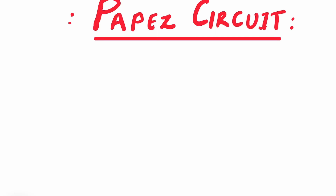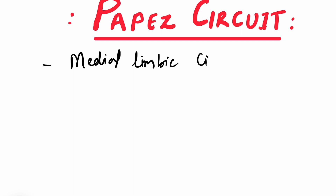Hello friends, welcome back to our YouTube channel Doctor's Corner. Today we are going to discuss about Papez circuit, which can also be pronounced as Papez circuit. It is also known as medial limbic circuit. Basically this is a neuronal circuit for the control of emotional expression.